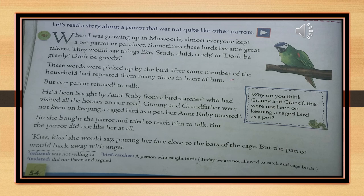She bought the parrot and tried to teach him to talk, but the parrot did not like her at all. 'Kiss, kiss,' she would say, putting her face close to the bars of the cage. But the parrot would back away with anger. Aunt Ruby purchased the bird from a bird catcher who was going house to house. Narrator's grandfather and grandmother were not interested in keeping a caged bird, but Aunt Ruby wanted to keep the parrot. She was adamant and argued to keep him.